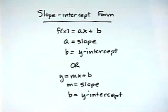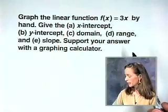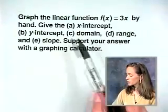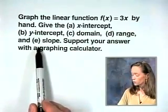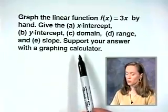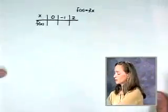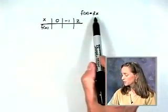Let's use this form of the equation of a line and work through an example. We will graph a linear function by hand, this time f of x equals 3x. We'll give the x-intercept, y-intercept, domain and range, and in addition we'll find the slope of the line. When we're done, we will support our answer with the graphing calculator. To graph by hand, we need three ordered pairs. Our line is f of x equals 3x.